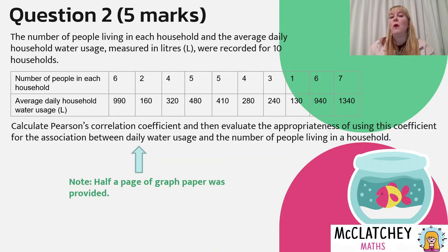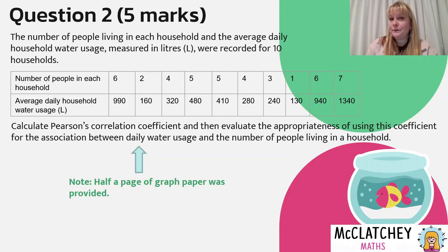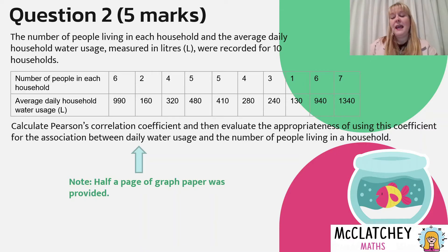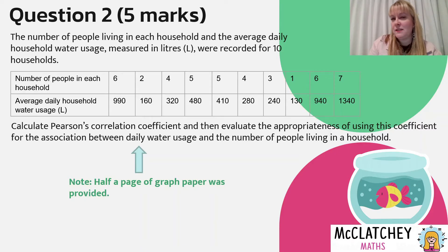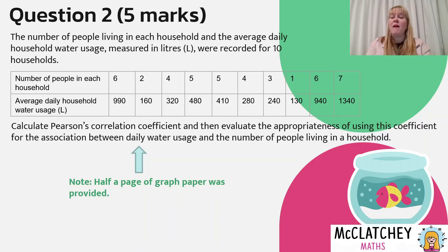When we looked at question one a few videos back, it asked students to develop a model and didn't provide any graph paper. A lot of students decided to draw a graph and it wasn't overly helpful. In this case, the fact that QCAA provided graph paper gives you the big hint you need to draw a scatter plot. So that would be my very first starting point, along with calculating R using the calculator.